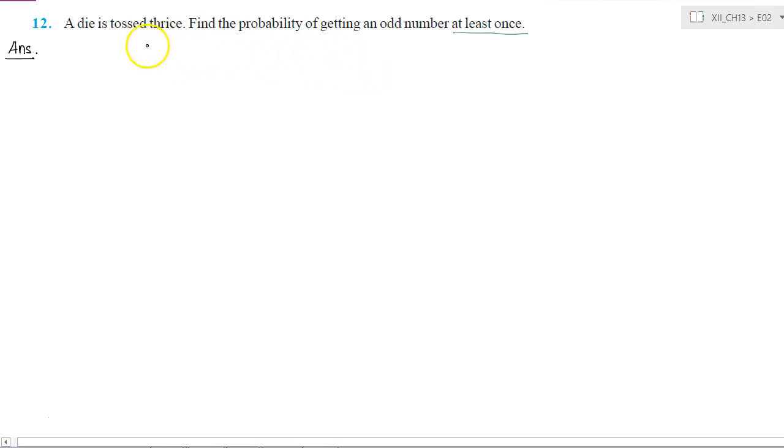When we have many trials going on, rather than calculating all the possible cases for getting at least once, it is easier to do it like probability of getting at least one odd number is equal to one minus probability of getting all even numbers.